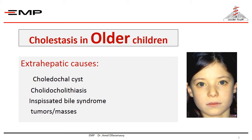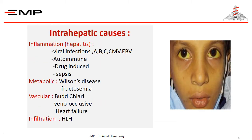The differential diagnosis of de novo cholestasis in older children is different from that in the neonatal period. The extrahepatic causes are mainly choledochal cyst, stones in the common bile duct, inspissated bile syndrome, and tumors or masses causing compression on the extrahepatic bile ducts. Intrahepatic causes include inflammation, but at this age, hepatitis A, autoimmune hepatitis, and drug-induced hepatitis are at the top of the list. From metabolic causes, Wilson's disease is the most prominent, as other metabolic diseases would have presented earlier. Vascular causes and liver infiltration can occur at any age.